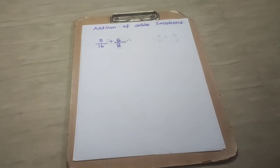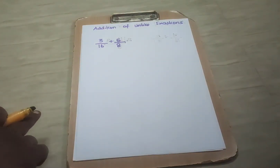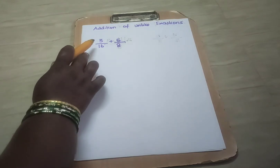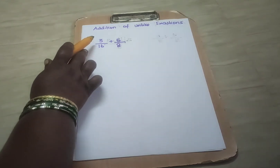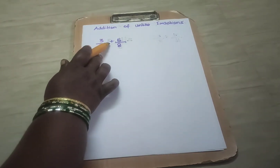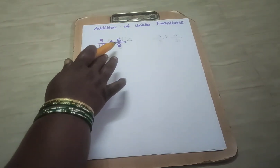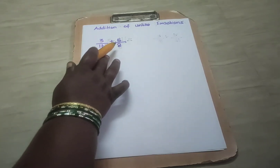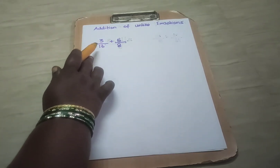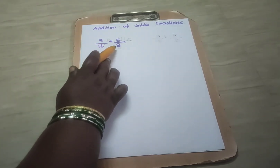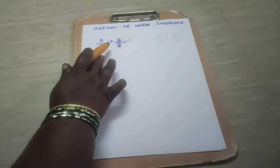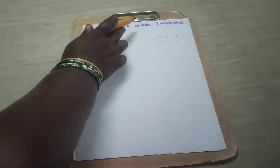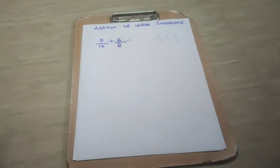Now let us see addition of unlike fractions. The fraction given here is 3 by 16 plus 5 by 8, and here the denominators are different — here it is 16 and here it is 8. So if the denominators are different, it is said to be an unlike fraction.